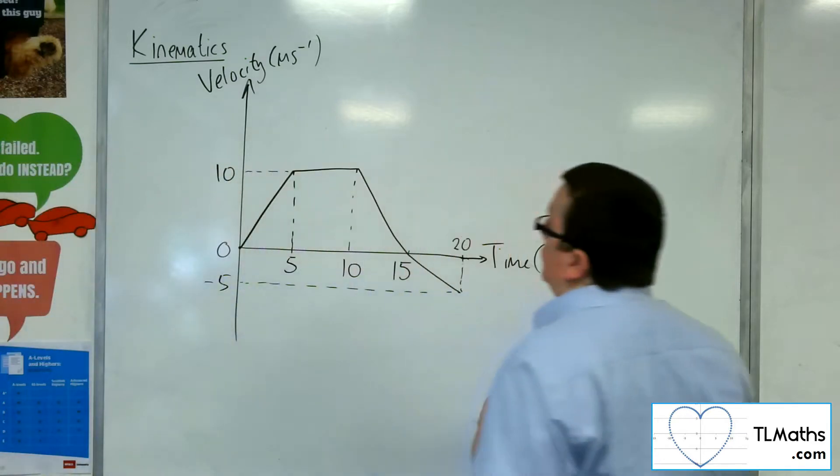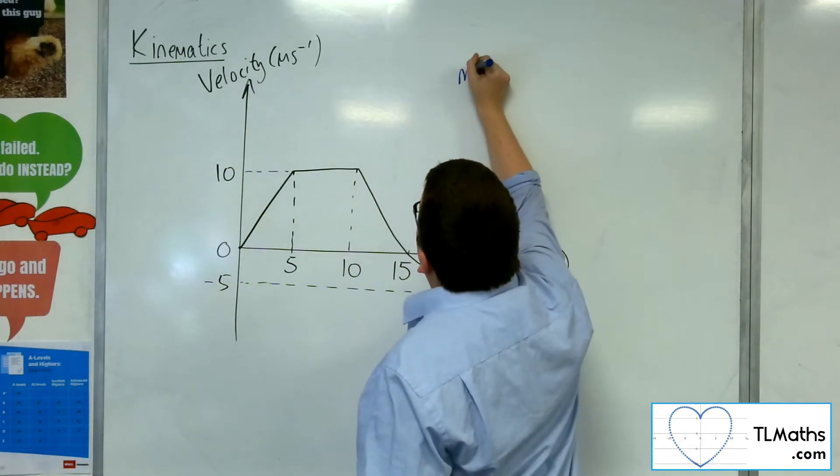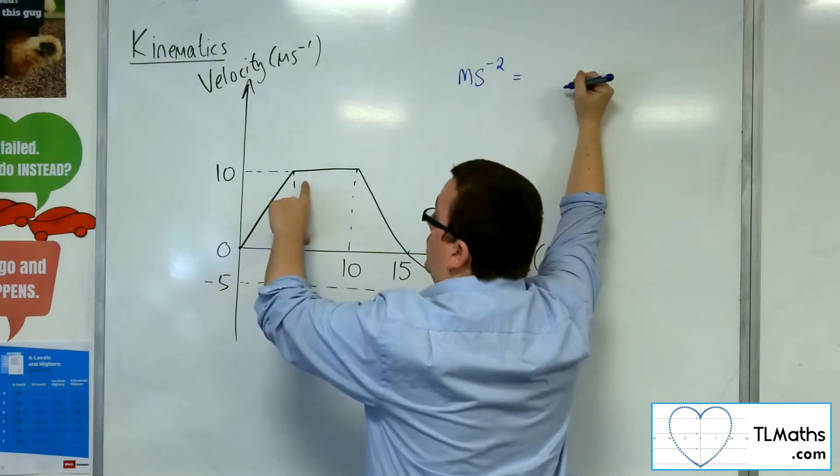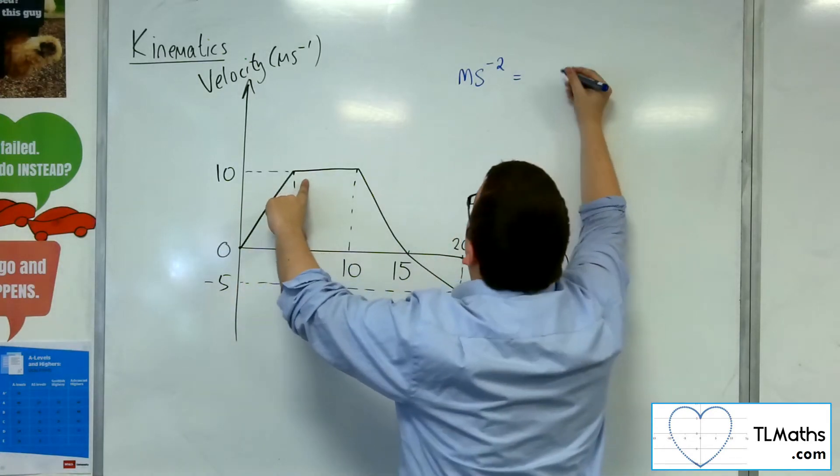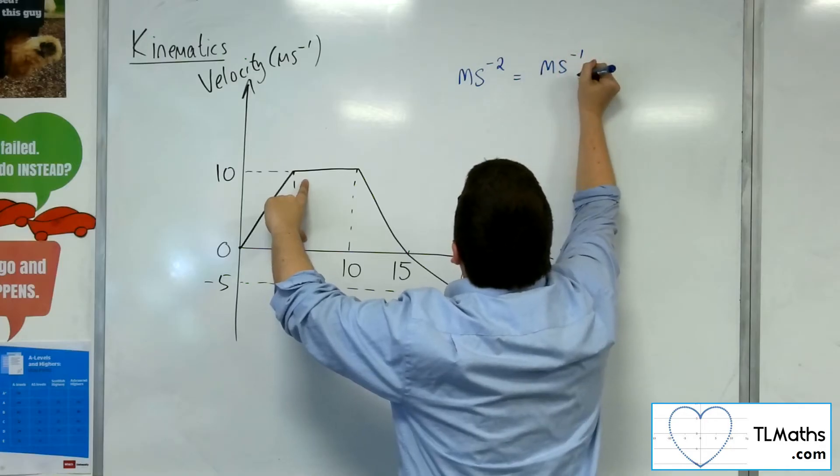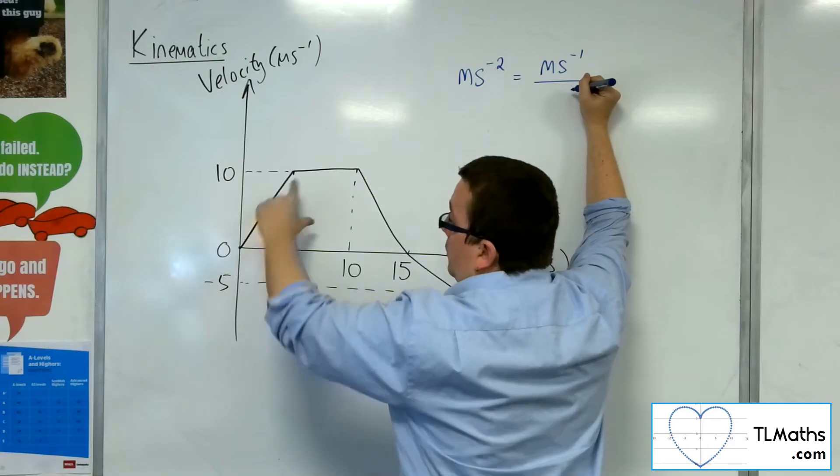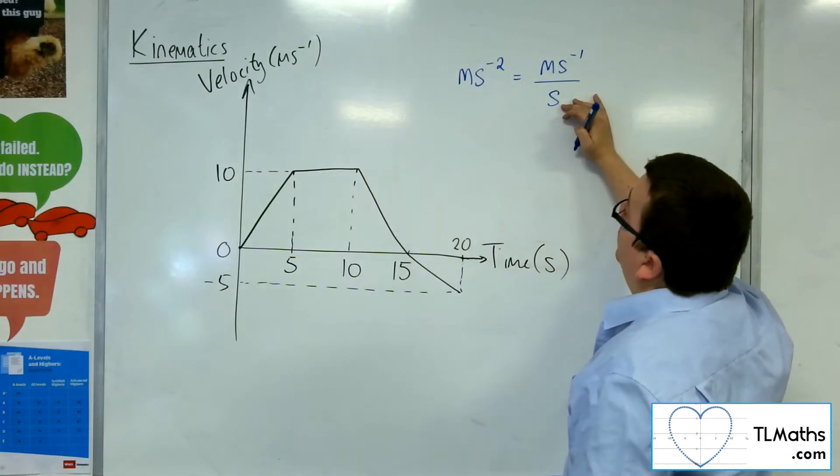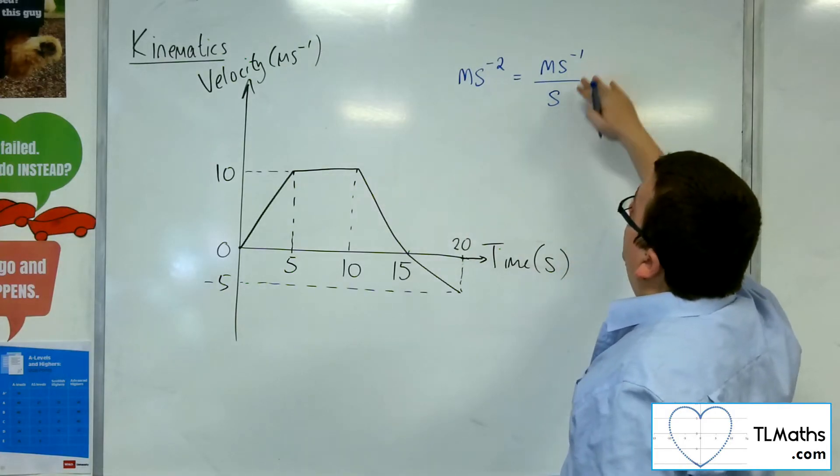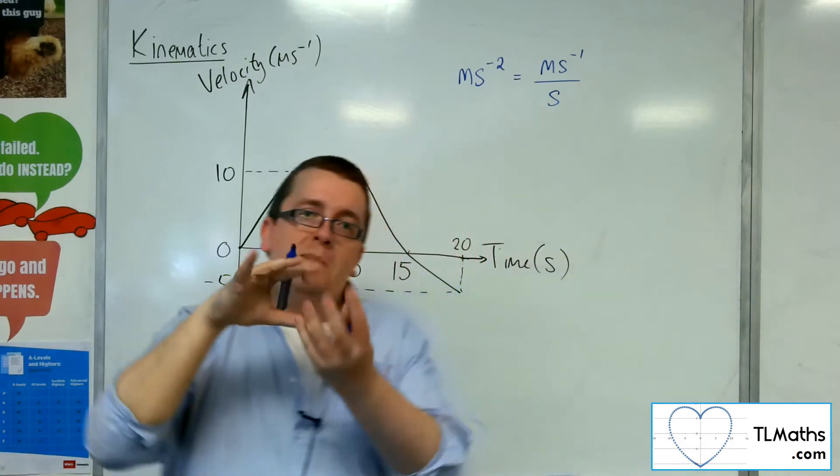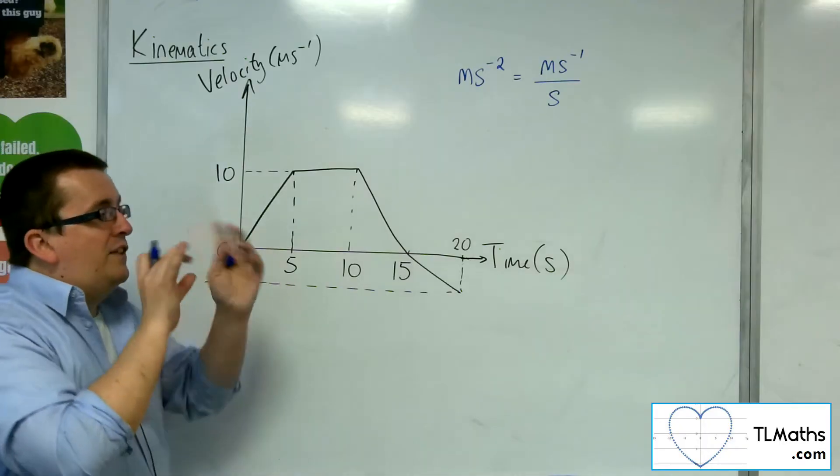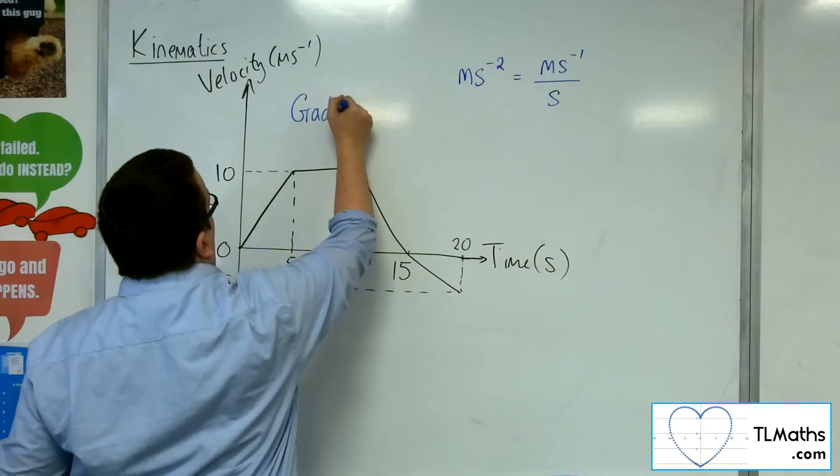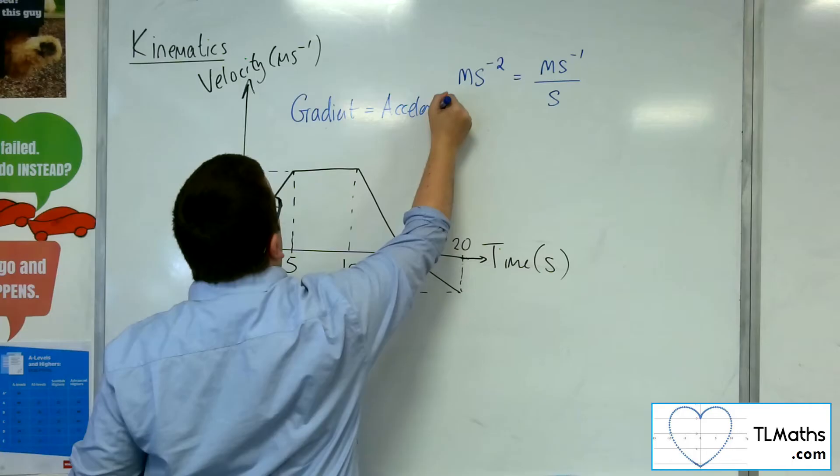And this makes sense because we know that an acceleration is metres per second per second. And what are we doing there? Well, we are getting the difference in the y-coordinates, which is the velocity, which is metres per second. And then we are dividing it by a time. So difference in y divided by difference in x, and the time's measured in seconds. So metres per second divided by seconds gives us the metres per second per second. So the actual dimensional analysis that we're doing there, looking at the units, it makes sense that the gradient of a velocity time graph is equal to the acceleration of the particle.